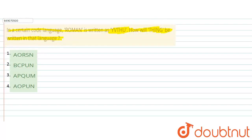So here are 4 options given. The given code is R-O-M-A-N, and this becomes Y-V-T-H-U. So first of all, let's find our place values.